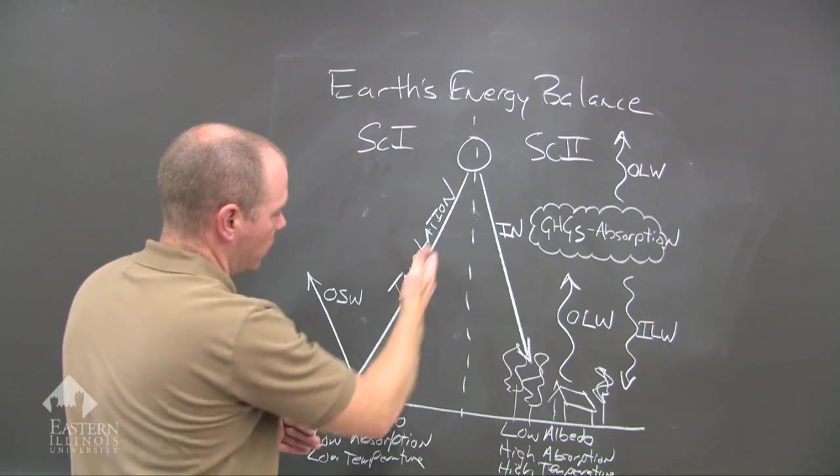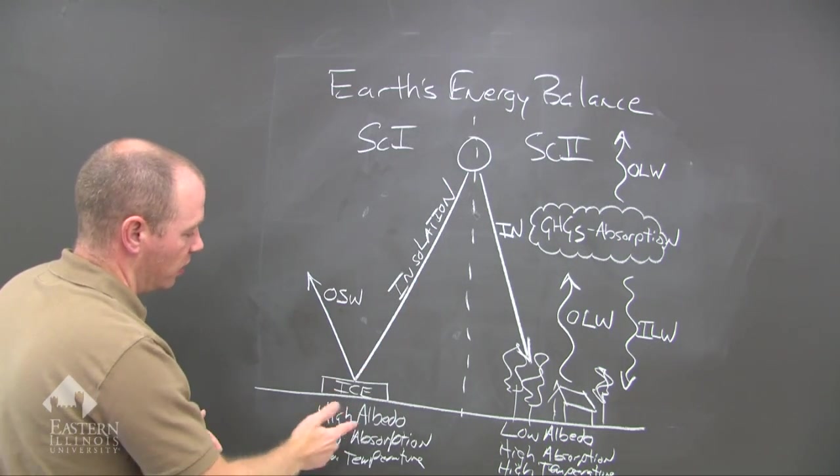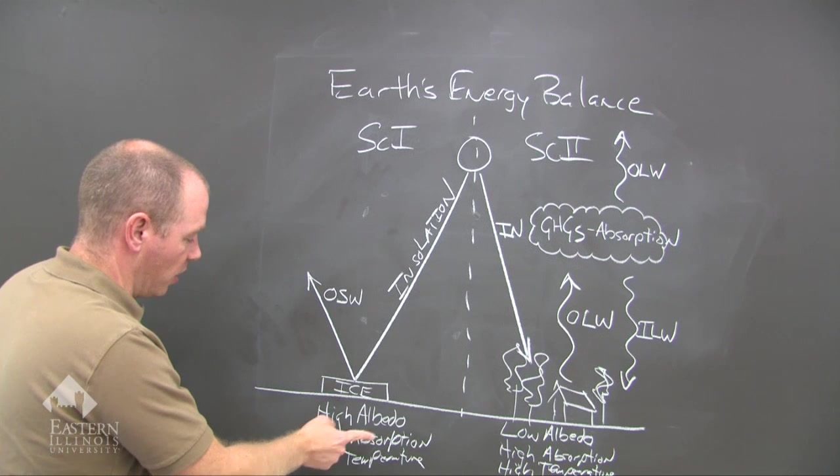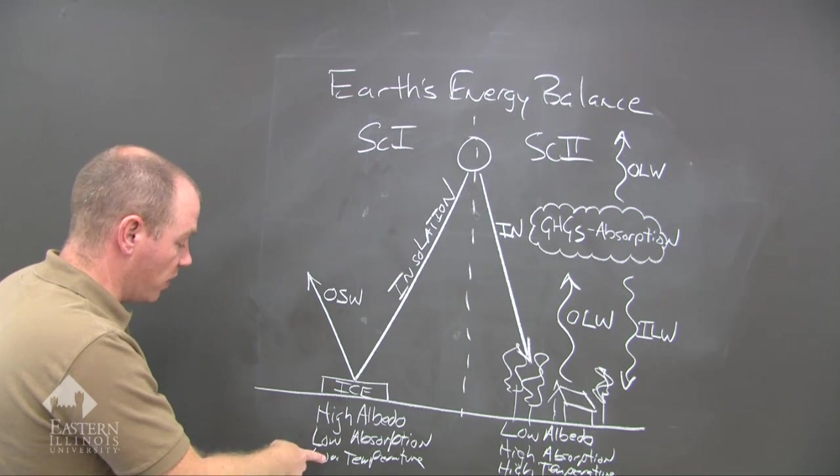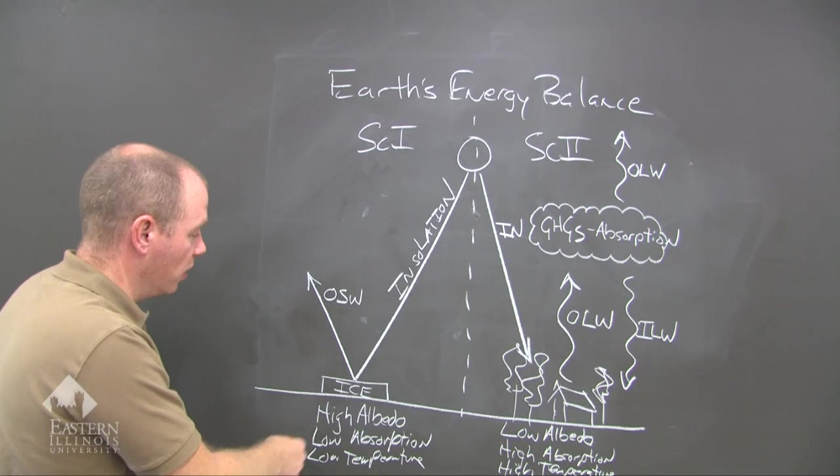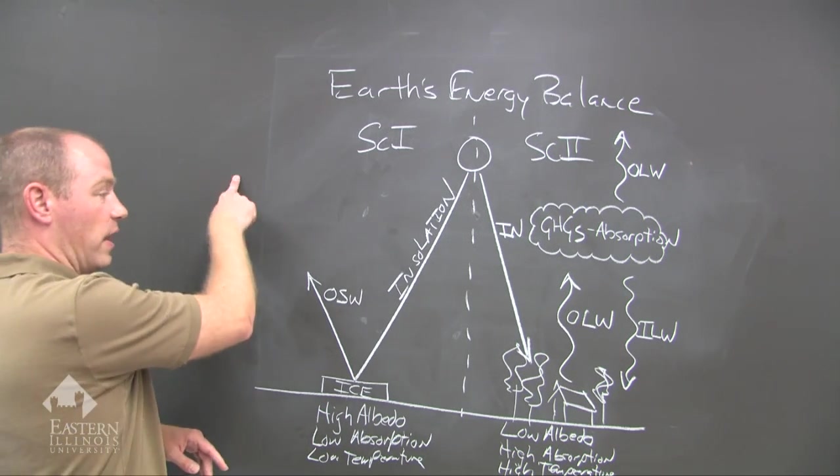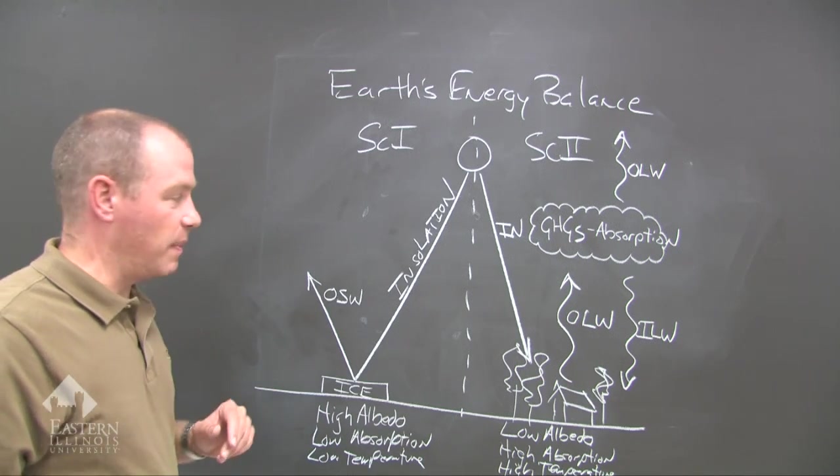Scenario one, you have insolation that comes in through the atmosphere, a surface of high albedo, which results in a low absorption of energy, which then results in a low temperature, because there is now a reflection of that shortwave radiation going out into space.